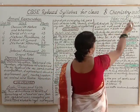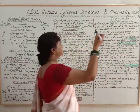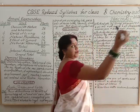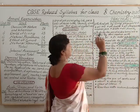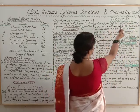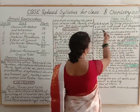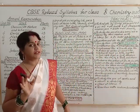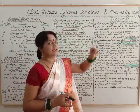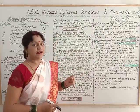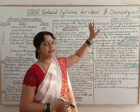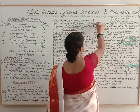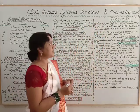Now for practicals. Practical 1: To find pH by using pH paper or universal indicator — of dilute HCl, dilute H₂SO₄, dilute NaOH, lemon juice, distilled water, and dilute sodium hydroxide and carbonate. This practical has been deleted for this session.